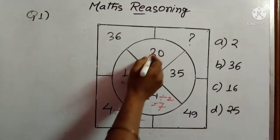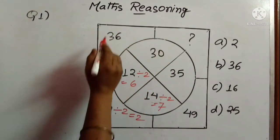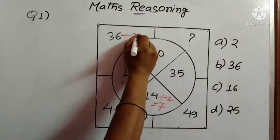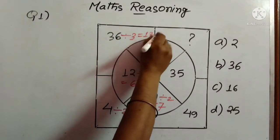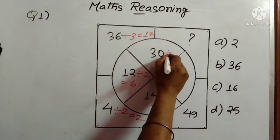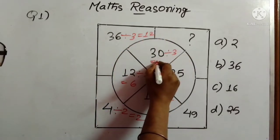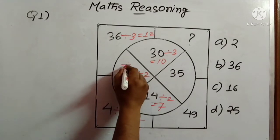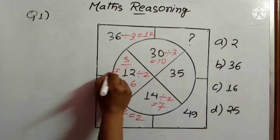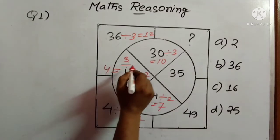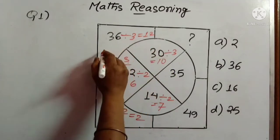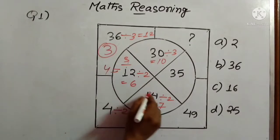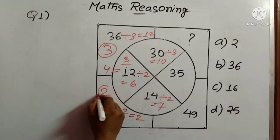Again, in this portion: 36 is divisible by 3, so we are getting 12. 30 is again divisible by 3, we are getting 10, and 12 is again divisible by 3, we are getting result 4. So all these three numbers are divisible by 3, and all these three numbers are divisible by 2.